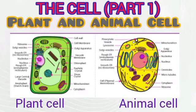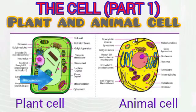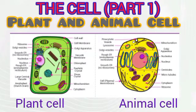The plant cell, as you can see from the diagram, actually has a very large vacuole, while the animal cell may possess a small or no vacuole. The plant cell has a rectangular shape and it is fixed, while the animal cell is round and in some cases irregular in shape.